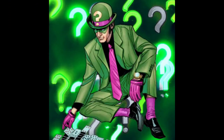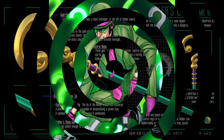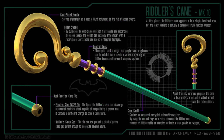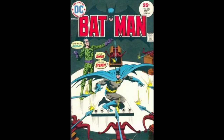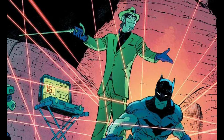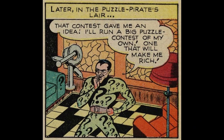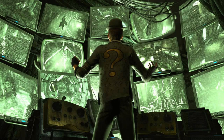The Riddler is known for using a variety of gadgets and tools to aid him in his schemes and challenges. His equipment includes a question mark cane, a cane adorned with a question mark which the Riddler often carries as a signature accessory. The Riddler frequently sets up elaborate riddle-based traps and puzzles for his enemies, often involving wordplay, logic puzzles, or riddles. He often operates from a secret hideout or lair filled with gadgets, computers, and other equipment to aid in his schemes.